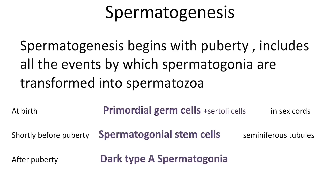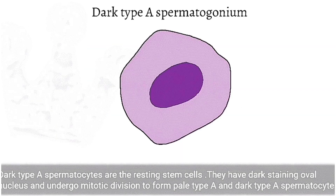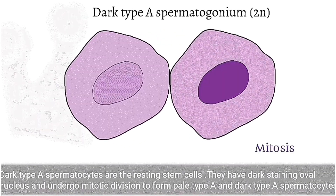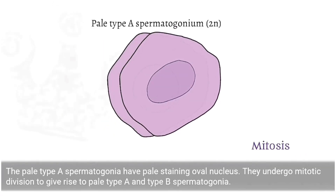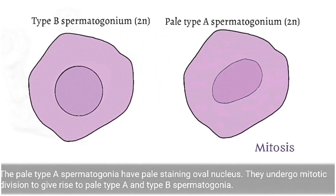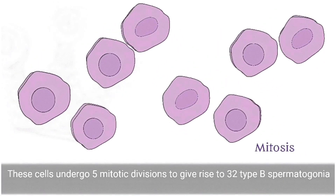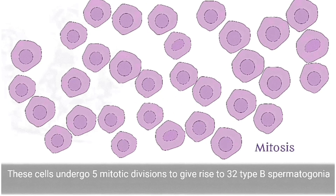After puberty, cells emerge from the stem cell population at regular intervals to form the dark type A spermatogonia. They are called dark cells because they have a dark staining nucleus. These dark type A spermatogonia undergo multiple mitotic divisions to form pale type A and dark type A spermatogonia, and the last or fifth mitotic division gives rise to 32 type B spermatogonia.